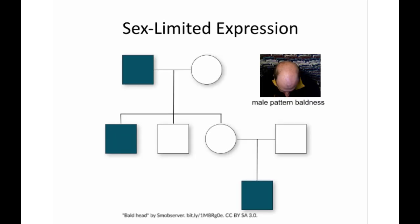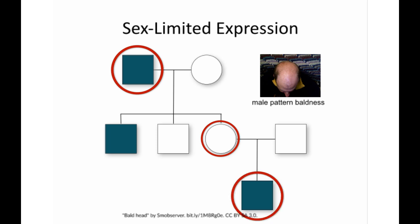In sex-limited expression, a phenotype is only seen either in males or females, but not in both. The example here is that of male pattern baldness, which is typically expressed only in males. It is an autosomal dominant trait, but females have a low likelihood of manifestation. In this case, a female has transmitted the trait and could be said to be non-penetrant, having an affected father and an affected son.